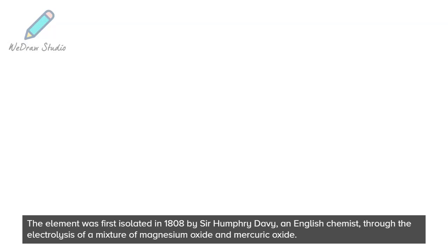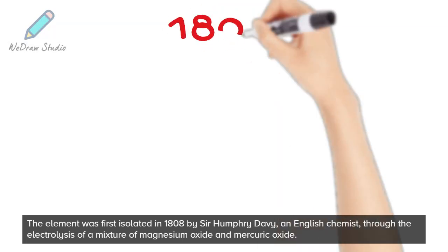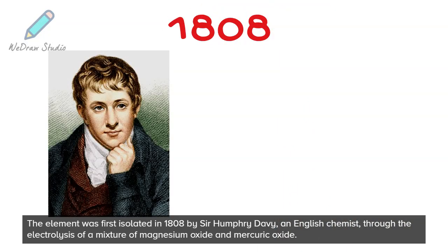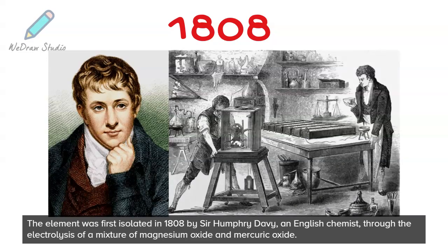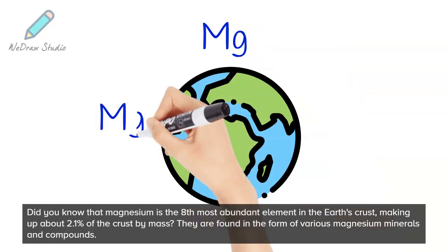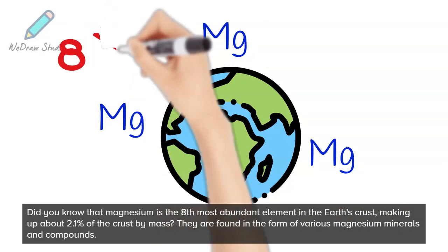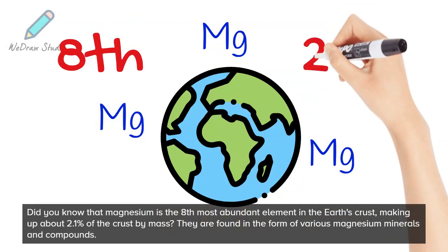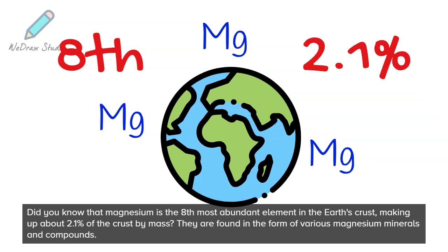The element was first isolated in 1808 by Sir Humphrey Davy, an English chemist, through the electrolysis of a mixture of magnesium oxide and mercuric oxide. Did you know that magnesium is the eighth most abundant element in the earth's crust, making up about 2.1% of the crust by mass? They are found in the form of various magnesium minerals and compounds.